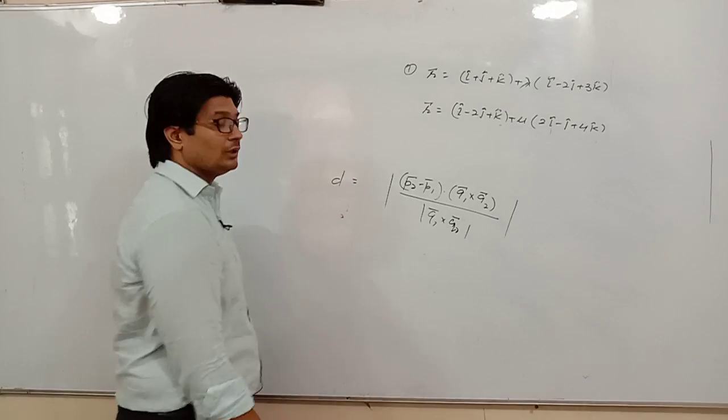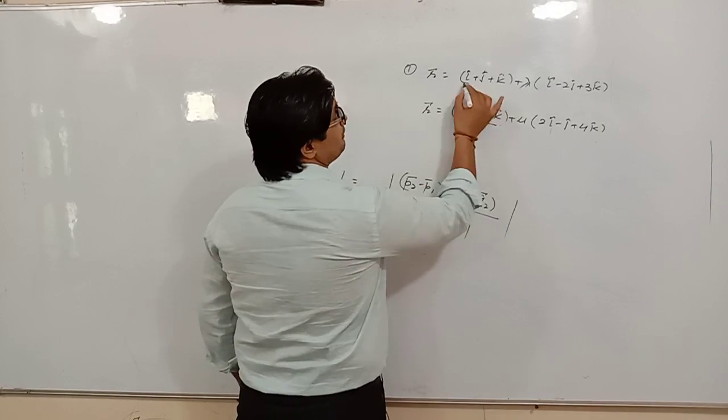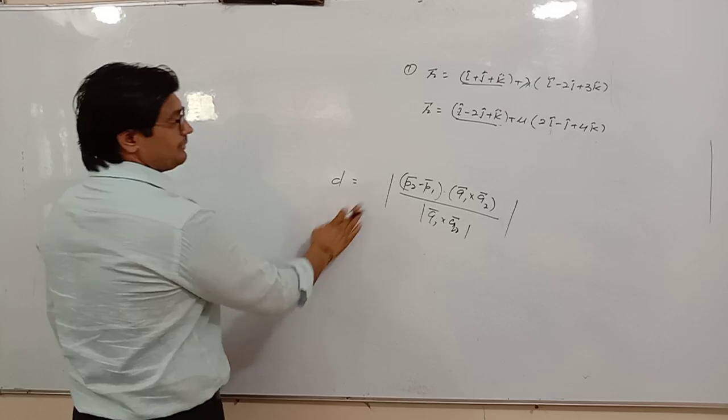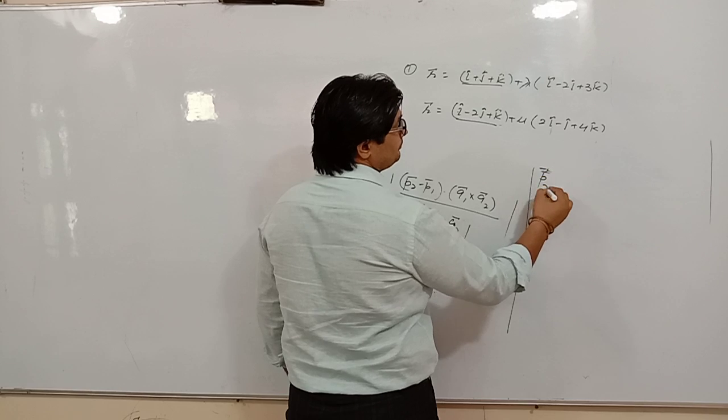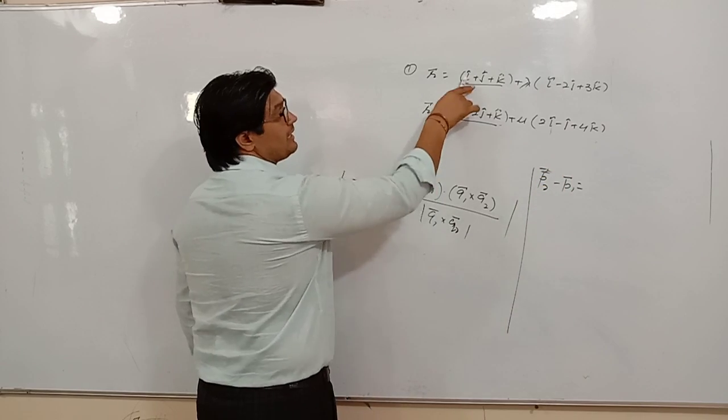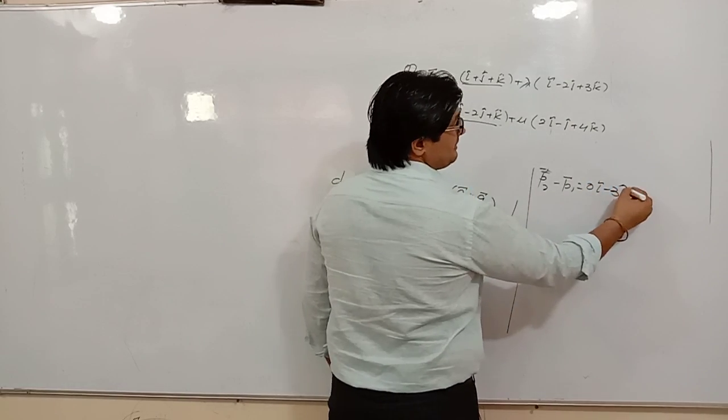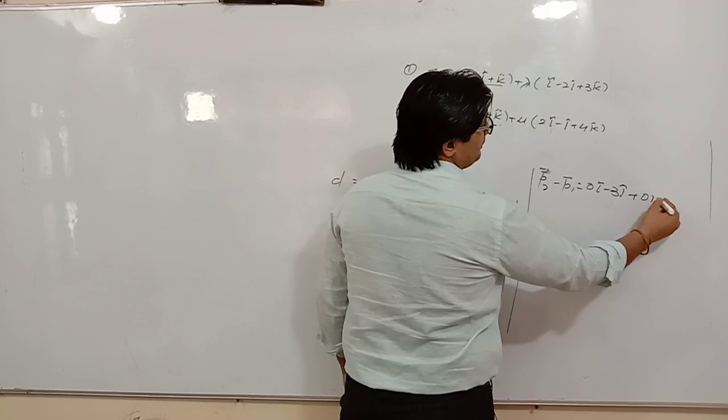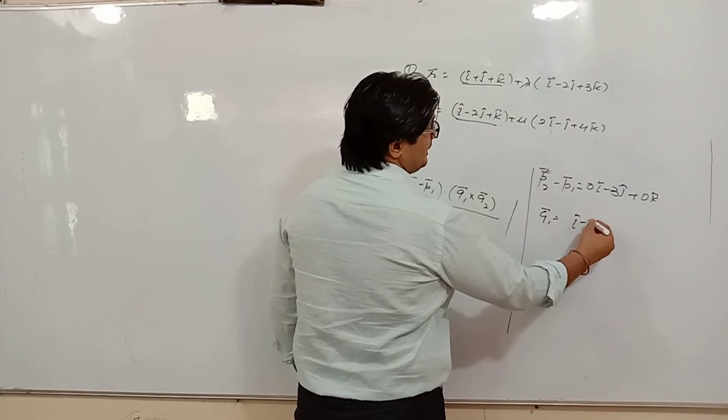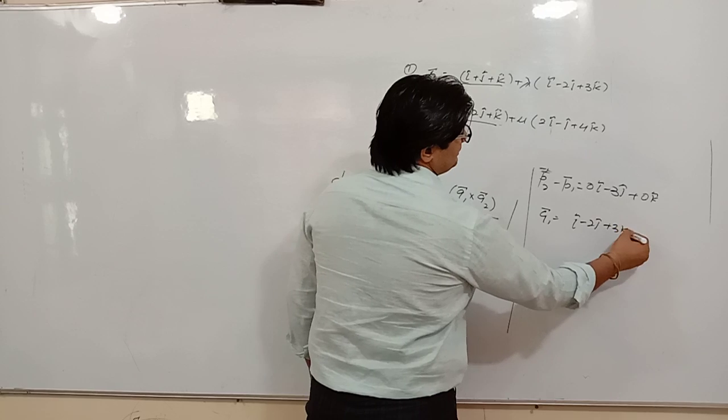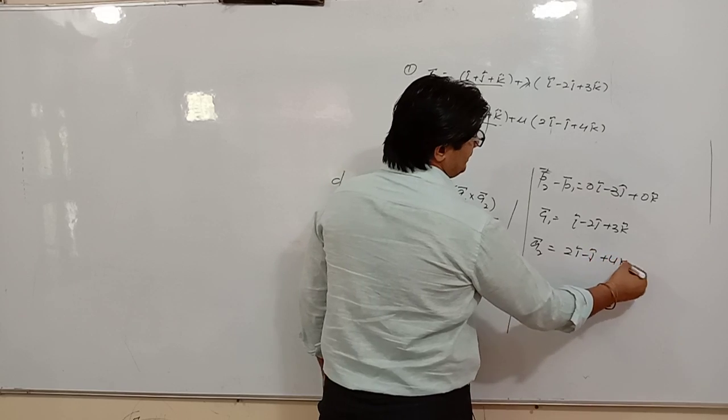Now applying this formula, d = (P2 - P1) dot (Q1 × Q2) / |Q1 × Q2|. Let's find P2 - P1. P2 - P1 = (i - i) = 0i, then -2j - j = -3j, then k - k = 0k. So P2 - P1 = -3j. Vector Q1 = i - 2j + 3k, and Q2 vector = 2i - j + 4k.